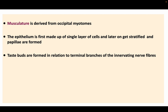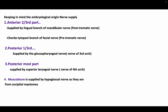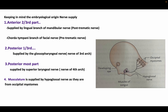The taste buds are formed in relation to the terminal branches of the innervating nerve fibers. Keeping in mind the embryological origin, the anterior two-thirds is supplied by the lingual branch of the mandibular nerve (post-trematic nerve), and the chorda tympani is the pre-trematic nerve, a branch of the facial nerve. The posterior one-third is supplied by the glossopharyngeal nerve (nerve of the third arch), the posterior-most part by the superior laryngeal nerve (nerve of the fourth arch), and the musculature is supplied by the hypoglossal nerve, as it is derived from the occipital myotomes.